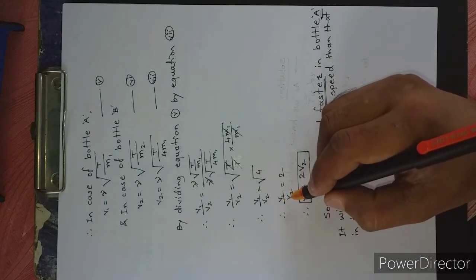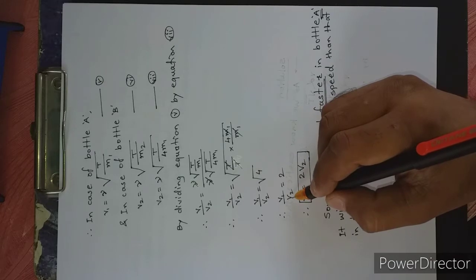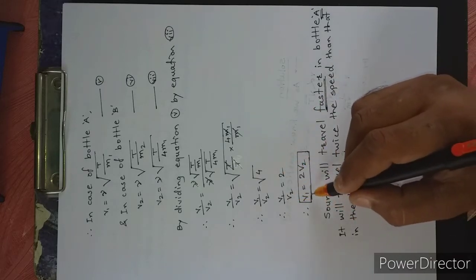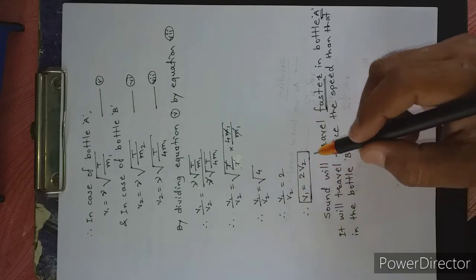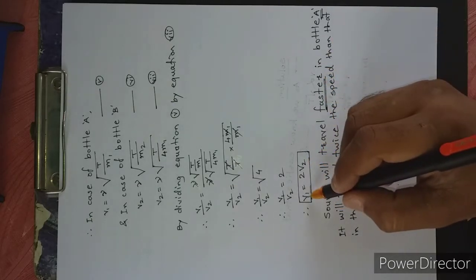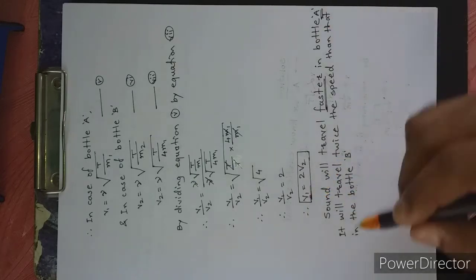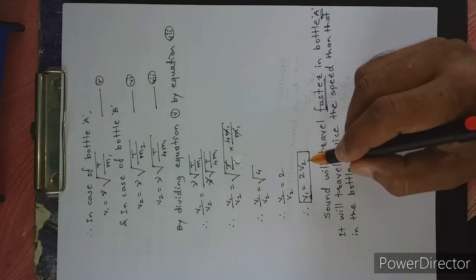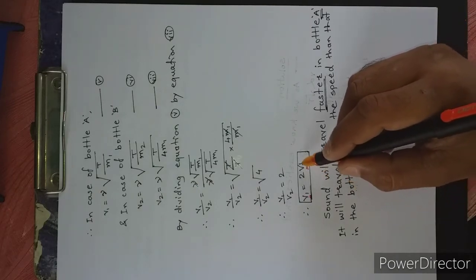Taking this square root, we get V1 divided by V2 is equal to 2. That means sound will travel faster in bottle A, and it will travel twice the speed compared to that in bottle B.